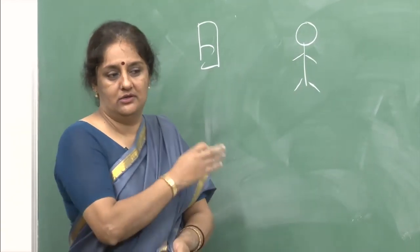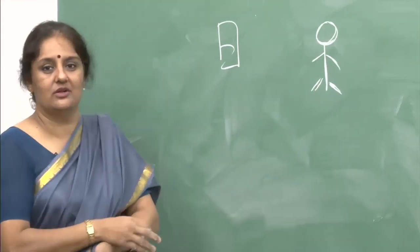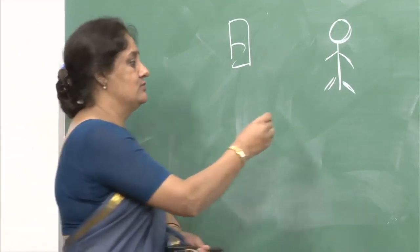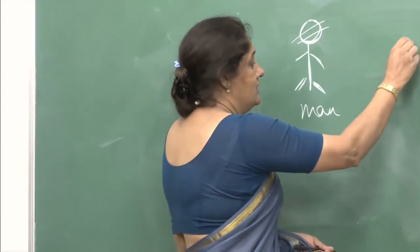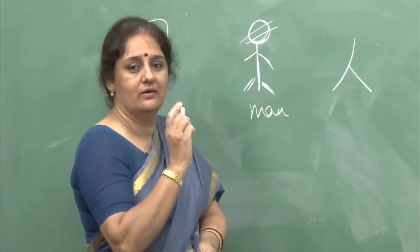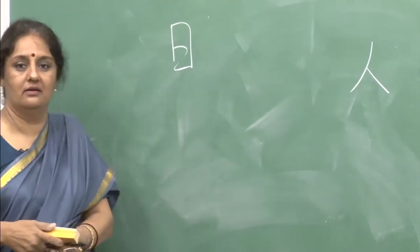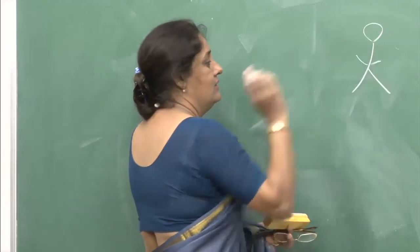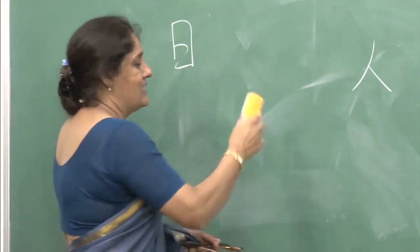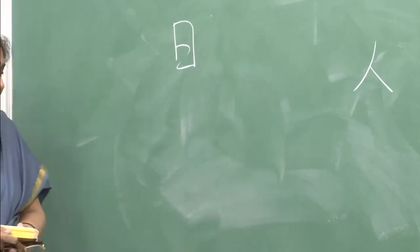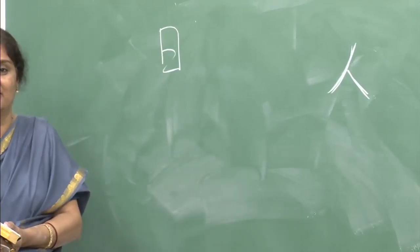How would you show a man in lines? When you want to talk about someone, you cannot make a full picture all the time. So just remove the head — make it like this. When you look at this picture, does it not remind you of a man? When you write this character in Japanese or Chinese pictograms, it tells you that it is a man.